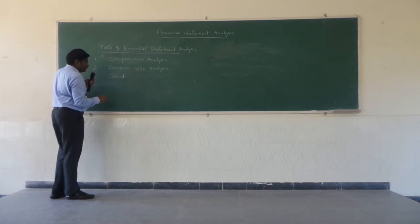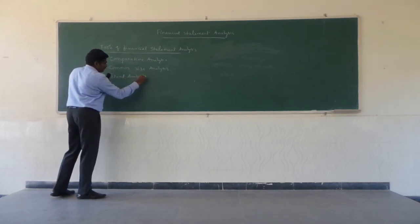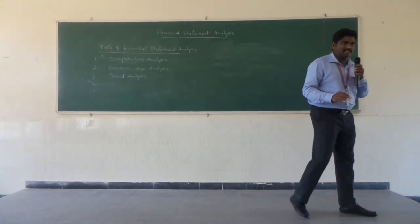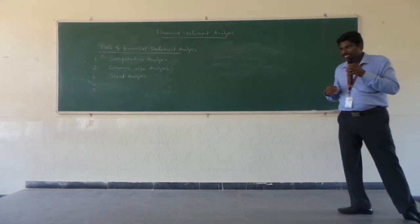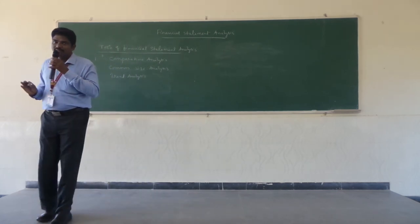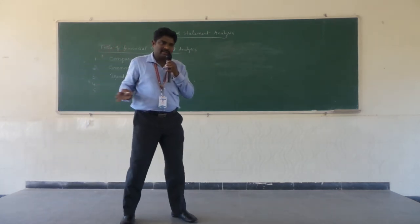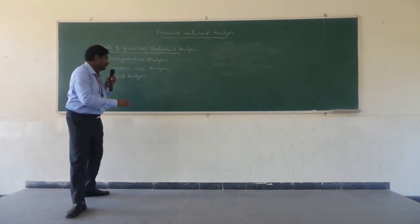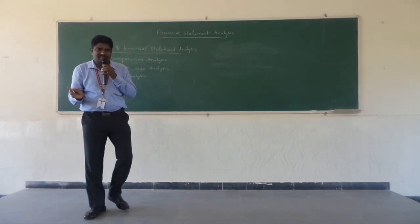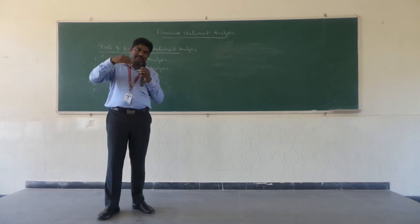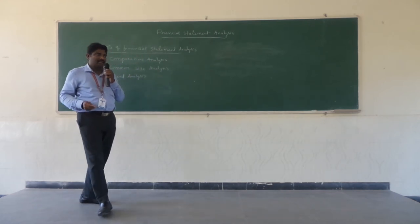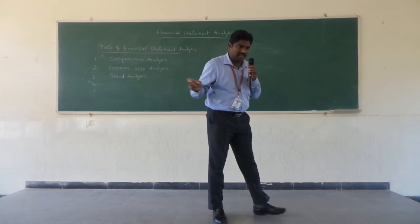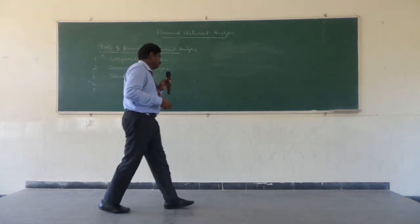The third tool is trend analysis. In case of trend analysis, they will take nearly three to four years or five to six years of data — either sales, profits, or different types of expenditure they are incurring — and calculate the differences. Based on the difference amount obtained by comparing one year's data with another, that amount is converted into percentages, and then they analyze the trend of the company in terms of sales, operating expenses, and non-operating expenses.